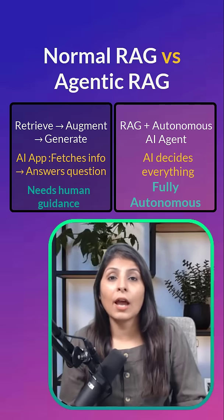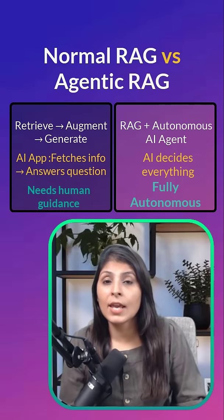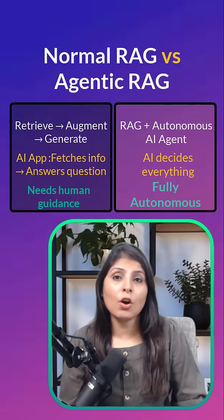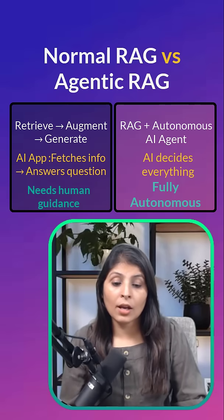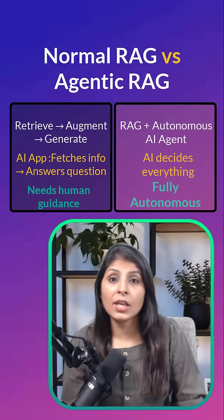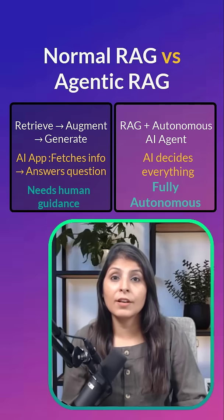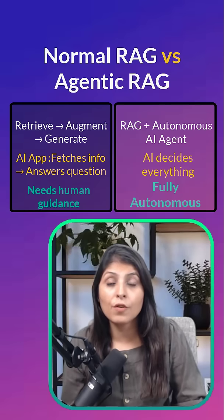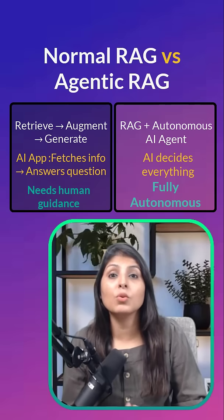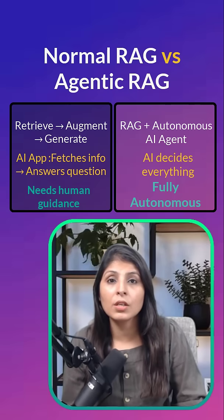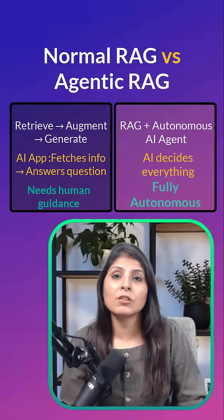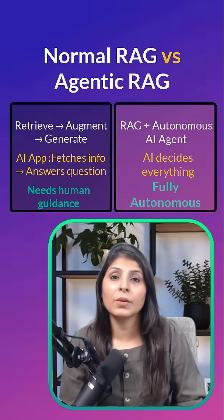So with Agentic RAG, we can build AI agents that are fully autonomous. Those AI agents will deliver accurate answers related to new information without step-by-step instructions from a human.